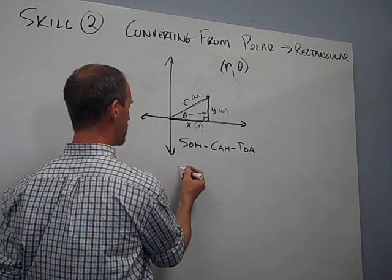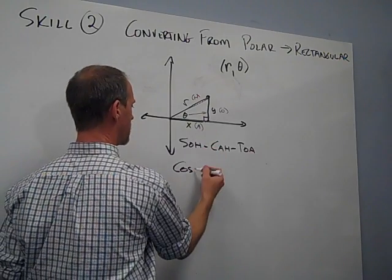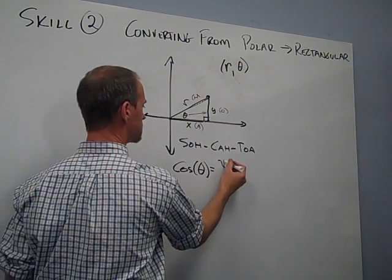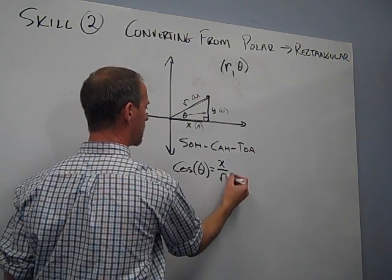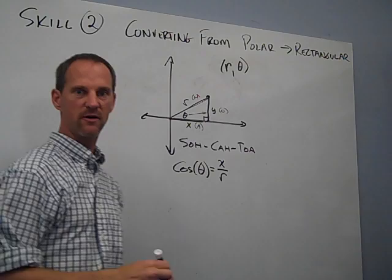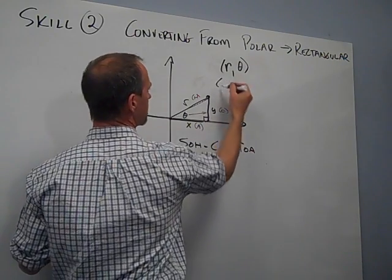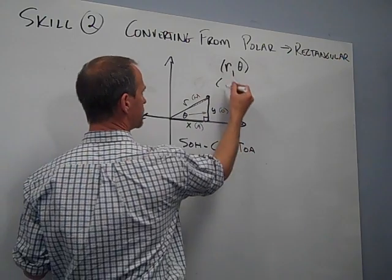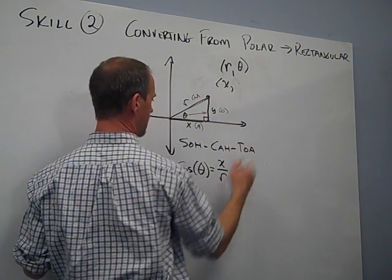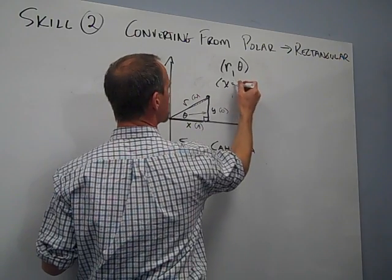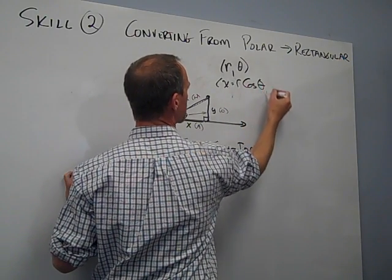So I'm going to write the equation that the cosine of theta is equal to the adjacent x over the hypotenuse r. And I just want to get x by itself. So if I multiply both sides by r, I can find that the x variable is based entirely on r times the cosine of theta. So x equals r cosine of theta.